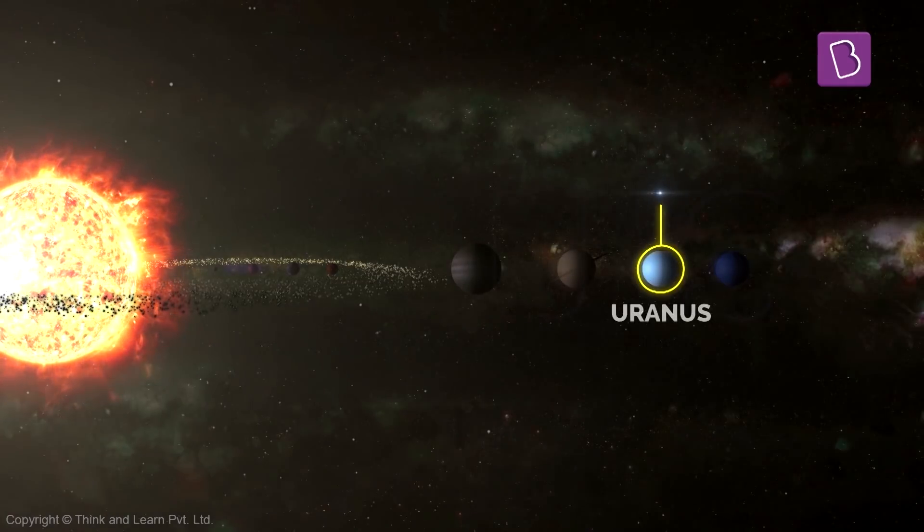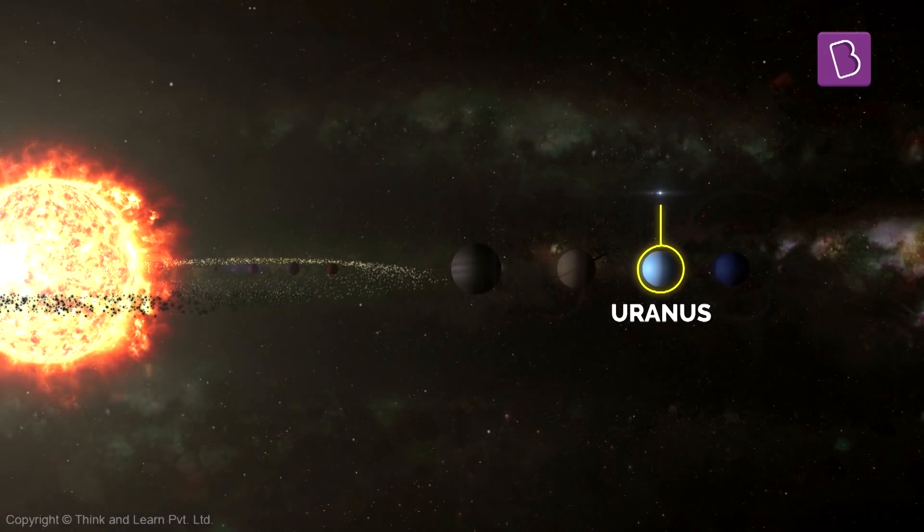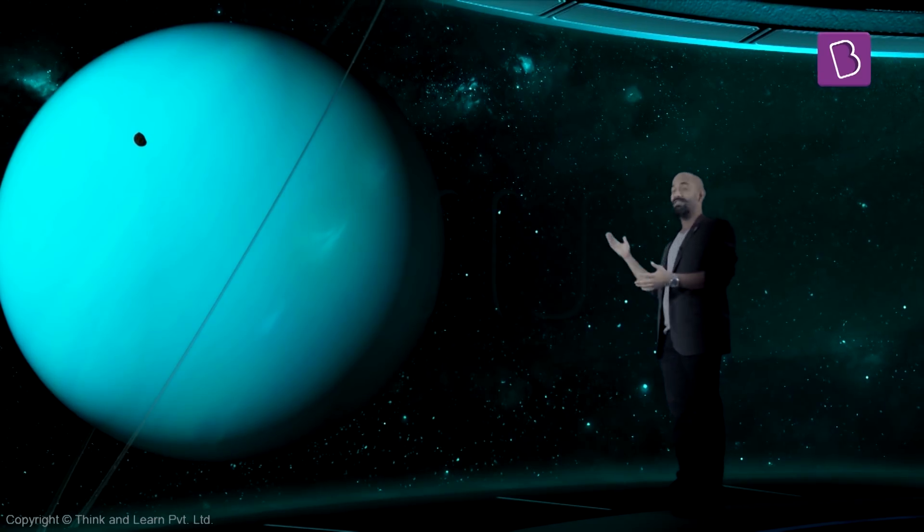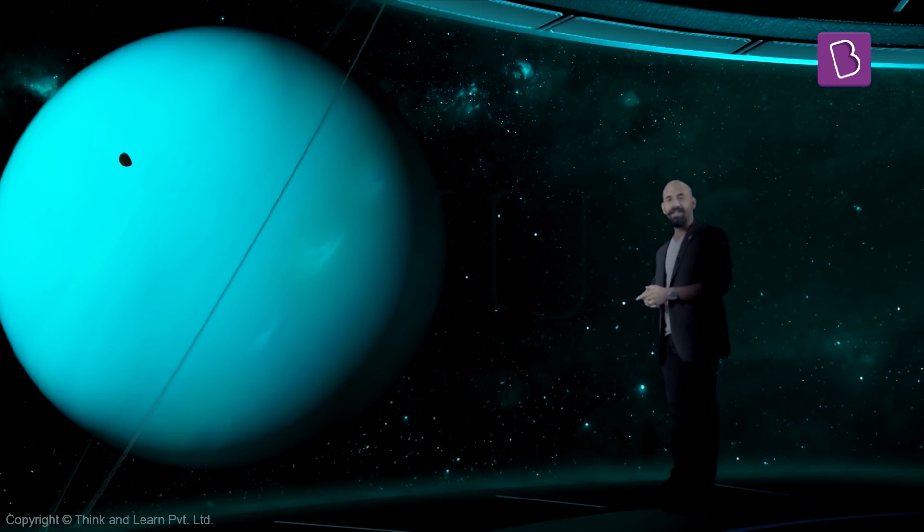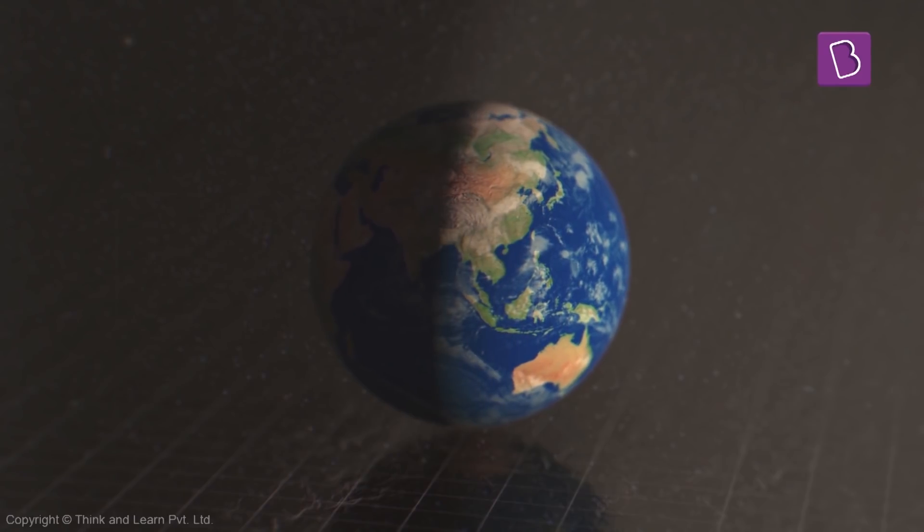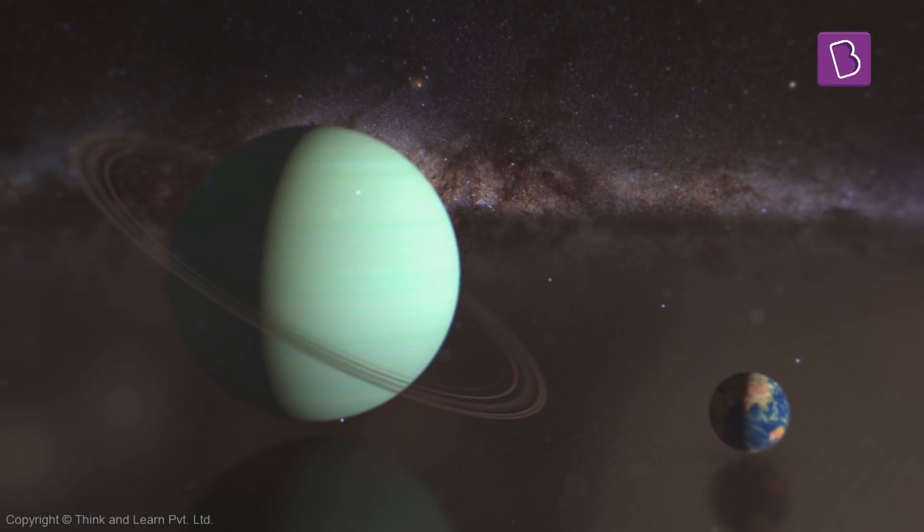The planet we've reached right now is Uranus. Uranus is also an ice giant because it's made of ice, and its size is very similar to Neptune. If Earth was the size of a pea, then Uranus would be the size of a golf ball, which is slightly bigger than a ping-pong ball.